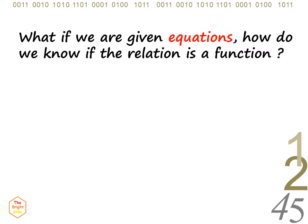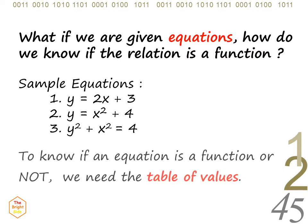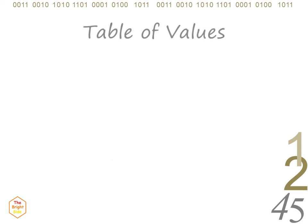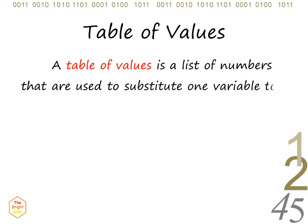What if we are given equations? How do we know if the relation is a function? To know if an equation is a function or not, we need to use the table of values. A table of values is a list of numbers used to substitute one variable and define the value of the other variable or missing number.